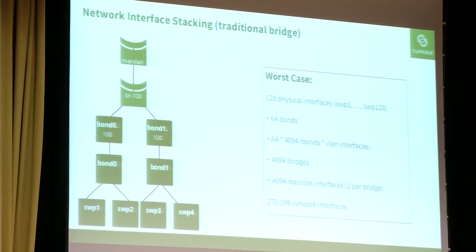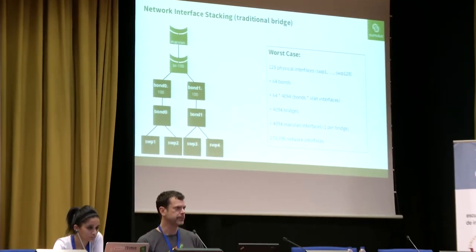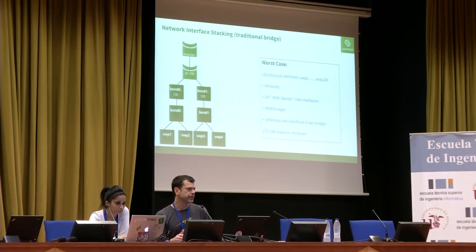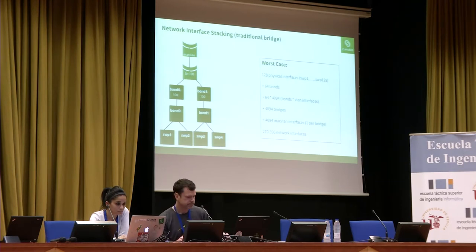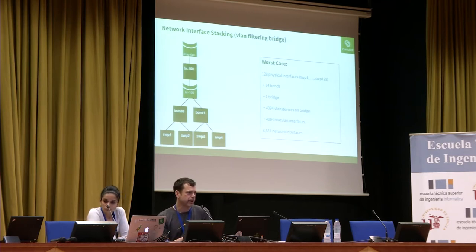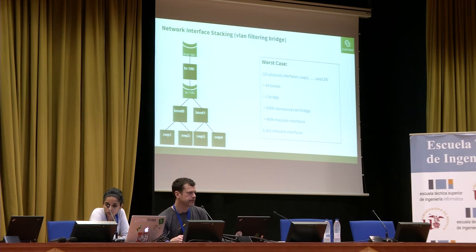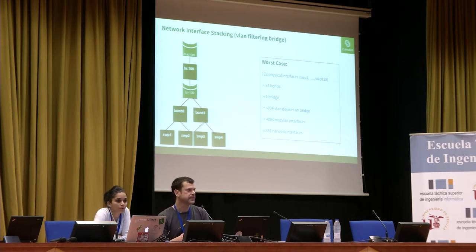Switch ports are often put into bonds for redundancy, and those bonds have VLANs on top. The bond interfaces are then plugged into a bridge for connectivity, with a MAC VLAN on top for virtual router redundancy. Starting with 128 switch ports, that converts into 64 bonds. With 4,094 VLANs per interface plugged into 4,094 bridges with MAC VLAN interfaces, you're getting into hundreds of thousands of network interfaces.